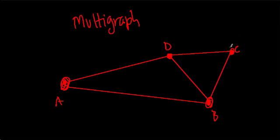I could add another curved edge going from C all the way to A. But this is still not a multigraph because there's only one edge that connects from A to C.